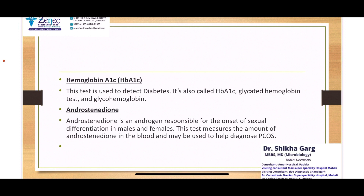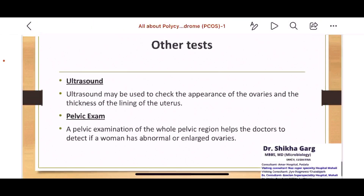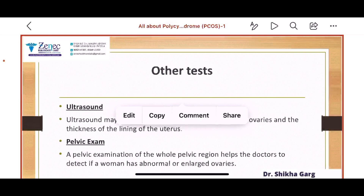Another test is androstenedione, an androgen responsible for sexual differentiation in males and females. It measures androstenedione in the blood and is helpful in diagnosing PCOS. Other important non-blood tests include ultrasonography, which gives the appearance of cysts in the ovary — the number of cysts is counted and used to label the patient as PCOS or not. Another is the pelvic examination done by the gynecologist. I've tried to make this very simple and easy for everybody — feel free to ask any questions or queries. Thank you.